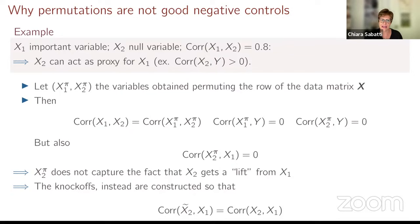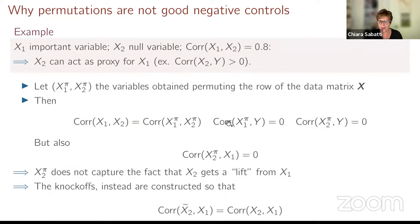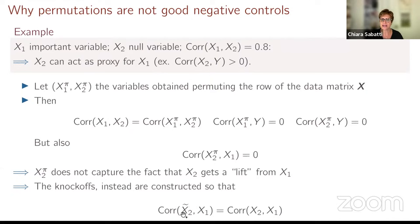This allows us to see why permutations are not good negative controls. Suppose x1 is an important variable and x2 is null, but they are correlated, so x2 can act as a proxy for x1. If we create permuted variables, the correlation between x1 and x2 is preserved, but the correlation between x2-permuted and x1 is zero, because we created a completely new dataset. This means that in the permuted dataset, x2-permuted does not capture the fact that the original x2 was correlated with x1. Instead, knockoffs are constructed so that the correlation between x2-knockoff and x1 is the same as the correlation between x2 and x1.